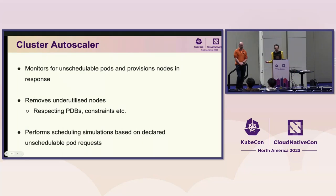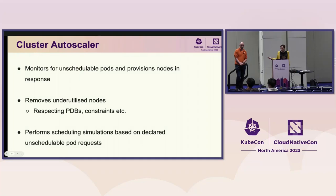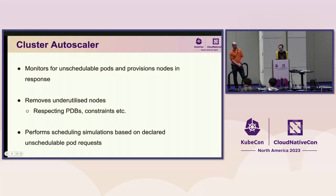Cluster Autoscaler is responsible for monitoring for unschedulable pods, provisioning nodes in response. It is also responsible for removing underutilized nodes, respecting PDBs and constraints. Everyone's focused on making their clusters more sustainable and cost-effective, and that's how Cluster Autoscaler aims to help. It performs scheduling simulations based on the declared unschedulable pod requests — it looks at all unschedulable pods, figures out what resources those pods need, including constraints, and then provisions nodes to meet those requirements.